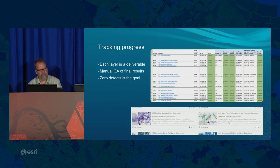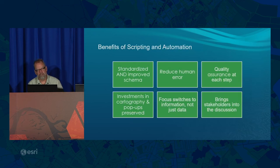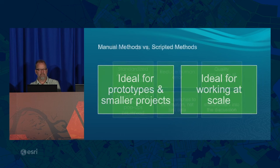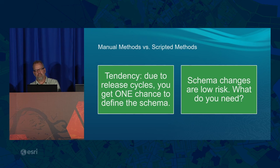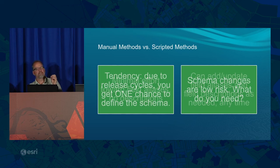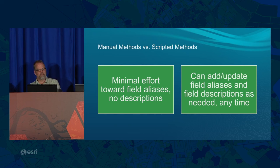The benefits of scripting and automating what Jeremy and Paul described: manual methods are great for prototypes and small projects — script when you want to work at scale, which to me means 10 layers or more. Schema changes used to be difficult, but now we have an attitude that schema changes are welcome. Some teams only get one chance a year to touch the schema, but with this approach I can offer two-week turnaround. If you can offload field alias and description editing into a spreadsheet and find people who enjoy it, you can make those changes any time. And instead of heavy QA toward the end right before release, we QA at each step — catching an error earlier is far less expensive.